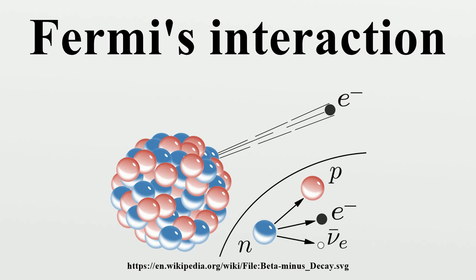Fermi found the initial rejection of the paper so troubling that he decided to take some time off from theoretical physics and do only experimental physics. This would lead shortly to his famous work with activation of nuclei with slow neutrons.